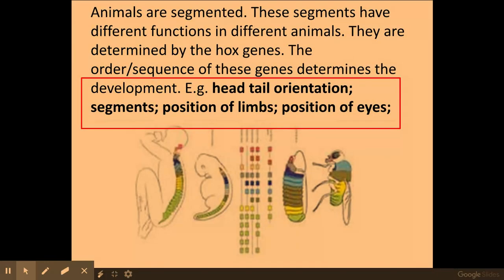The body plan relates to animals being segmented, and these different segments have different functions in different animals, all determined by the hox genes. The order and sequence of the hox genes determines development — for example, the head-to-tail orientation, segmentation broken down into segments within organisms, the position of the limbs, and the position of the eyes.